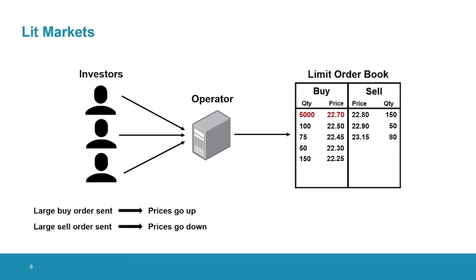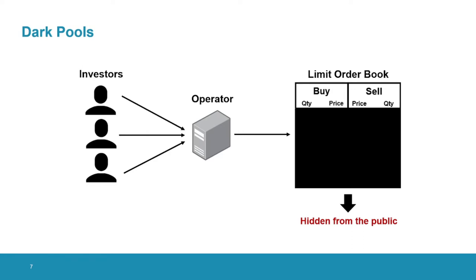This effect is known as price impact, and it can actually be quite costly for large volume investors. Because of that, there is this new type of trading venue that was created called a dark pool. In a dark pool, the information contained in the orders is kept hidden from the public until the trade happens, and there is a dark pool operator who will be the one seeing the orders and processing the auction according to some predefined mechanism.